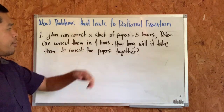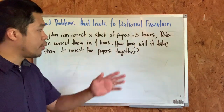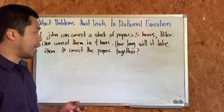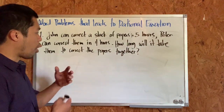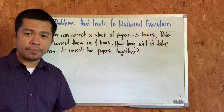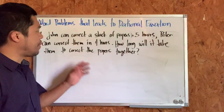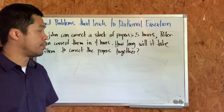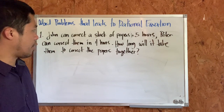John can correct a stack of papers in five hours. Peter can do the same job in four hours. The question is: how long will it take them if they work together to finish the job? This is basically the same as a rate problem, so let's determine first what things we need.